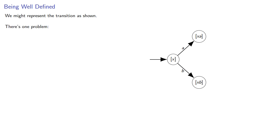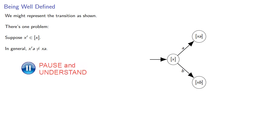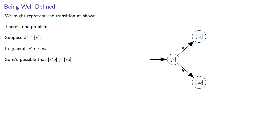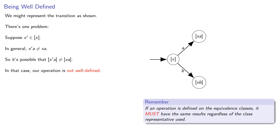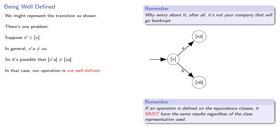There's just one problem. Suppose some string is an element of the equivalence class of X. In general, X'A won't be the same as X'A because the leading part of the string is different. So it's possible that the equivalence class generated by X'A is not the same as the equivalence class generated by X'A. In that case we say the operation is not well-defined. If an operation is defined on equivalence classes, it must have the same results regardless of the class representative used. We can't define an operation otherwise. Why worry about it? After all, it's not your company that will go bankrupt if you make a mistake — or maybe it is, and at the very least you'll end up looking for a new job. So let's prove that this actually works.